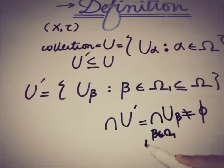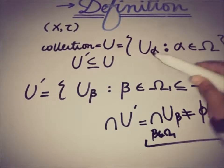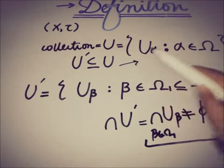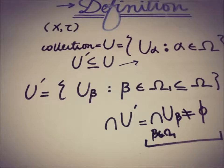So if this thing happens then we say that this u is said to satisfy the finite intersection property for the topological space, and this concept is equivalent to the concept of compactness in a topological space.